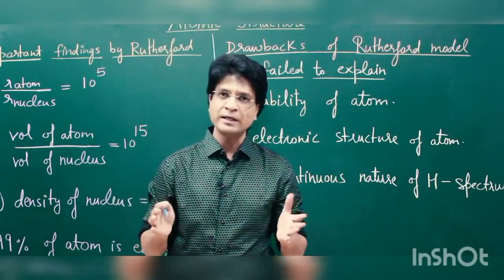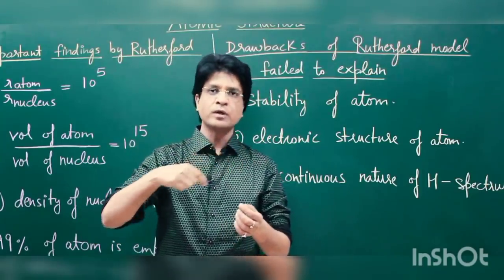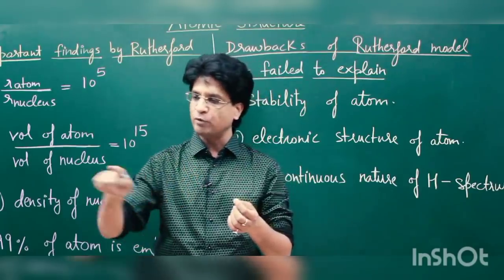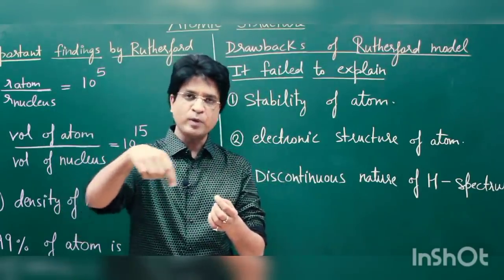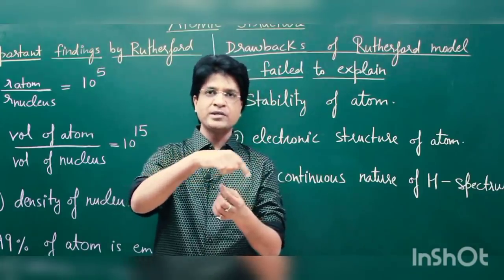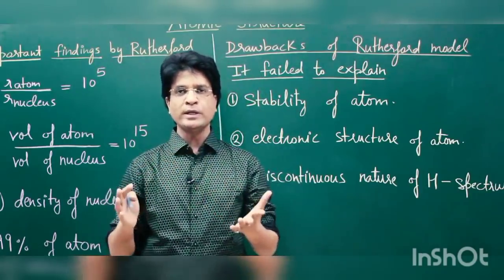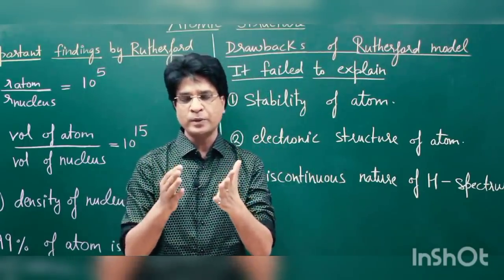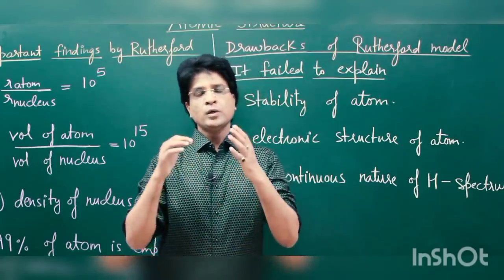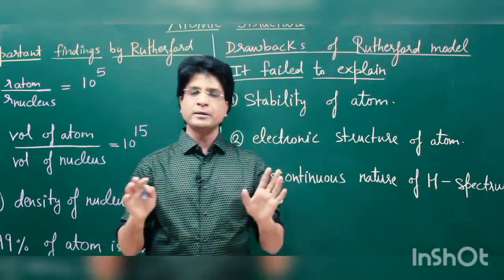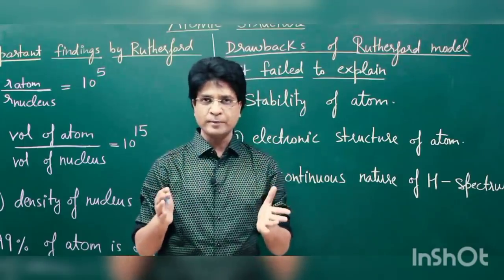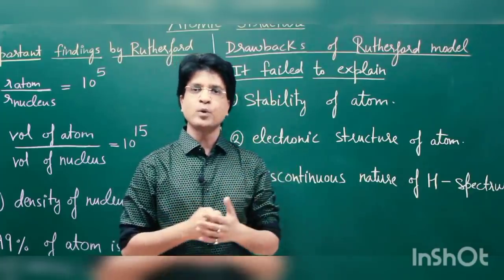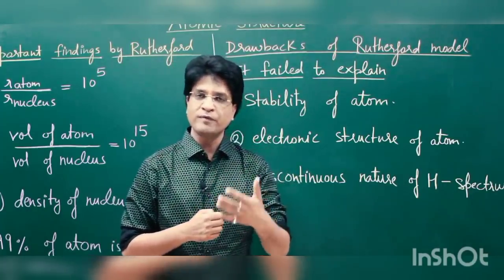Maxwell said that if a charged body like an electron revolves or accelerates, it will continuously lose its energy in the form of electromagnetic radiations. While losing kinetic energy, it will spiral down into the nucleus, and according to Maxwell's theory, the existence of the atom would come into danger. Though Rutherford was not able to completely explain the structure of atom, his model was a milestone in the development of atomic structure theory.